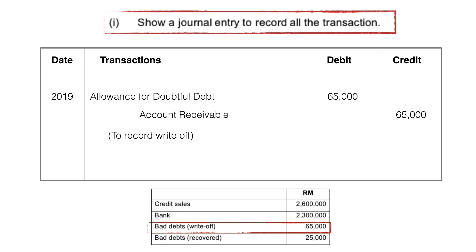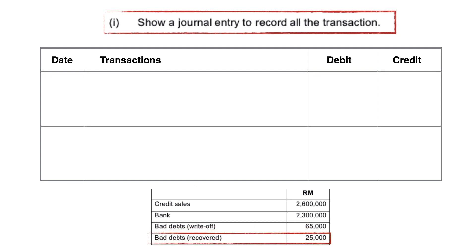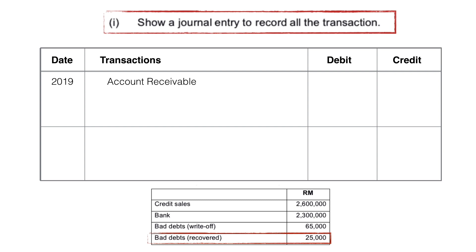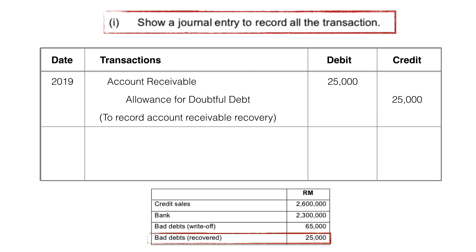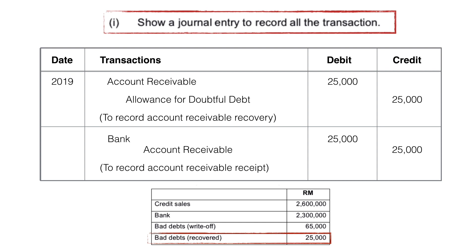Something good happens next. What will be happening now is we are recording bad debt recovery. This is the bad debt that we already written off but is now able to pay the account. What we will do is we have to debit accounts receivable in order to reinstate the account we already written off before, and we will credit allowance for doubtful debt in order to bring back the accounts receivable in our books. And then we will debit bank as indication that our money has increased, and again we will credit accounts receivable to reduce the amount.